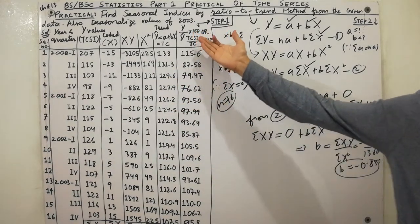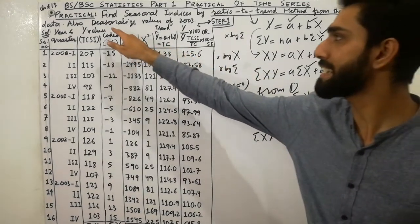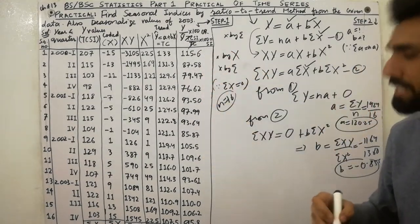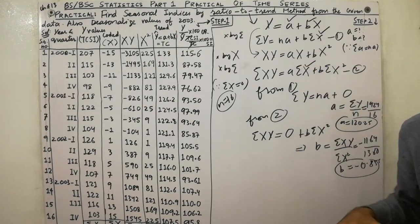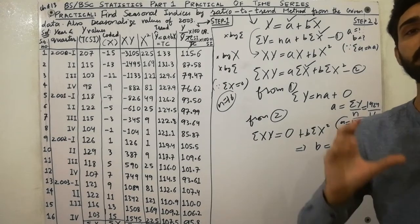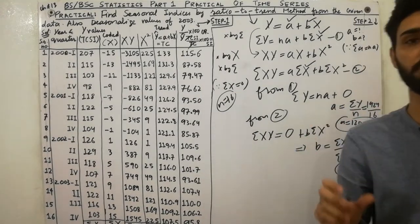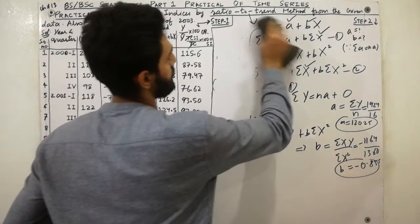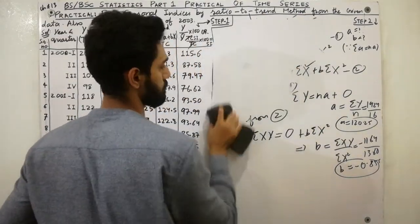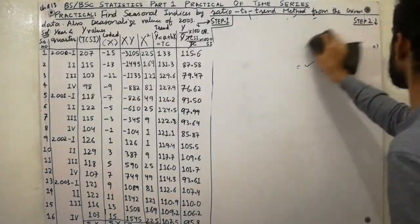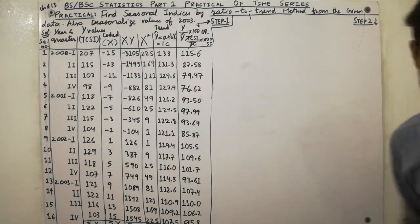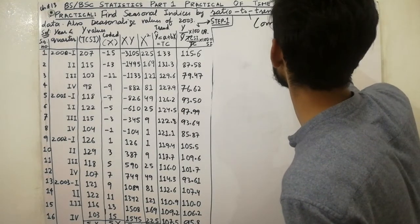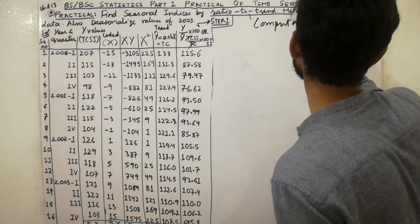With the trend values calculated, step two involves computing y divided by ŷ — the ratio of actual to trend values. This removes the trend and cyclical components, leaving only the seasonal component. Now moving to step three, which is the last and most important part of this section: the computation of seasonal indices.